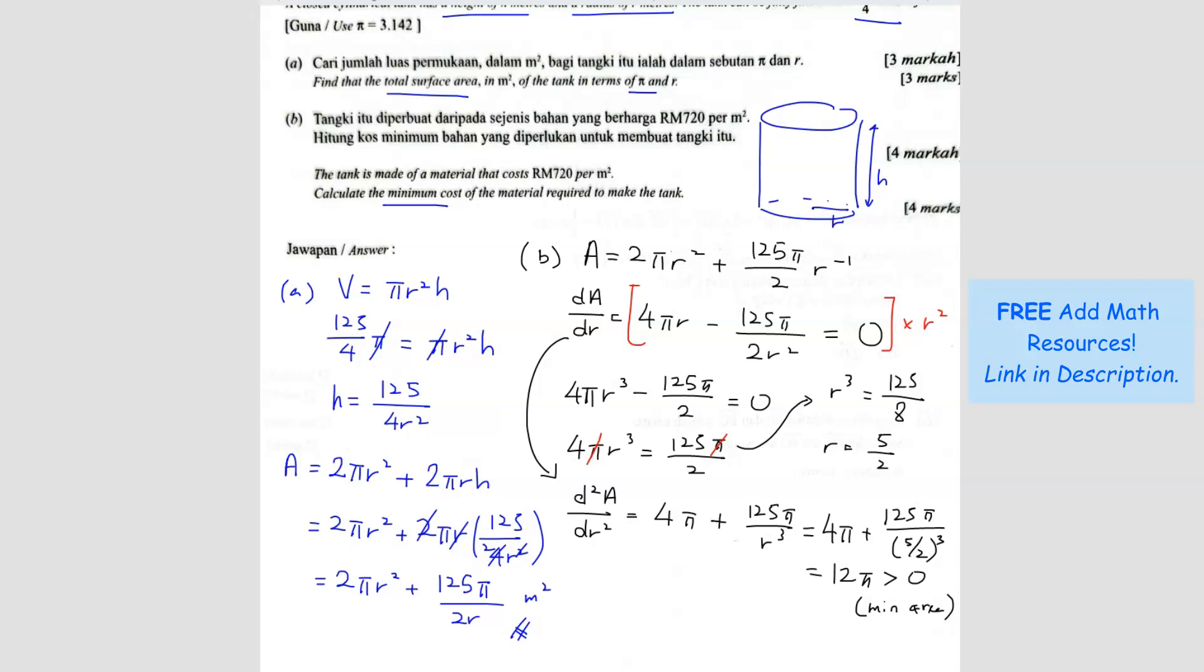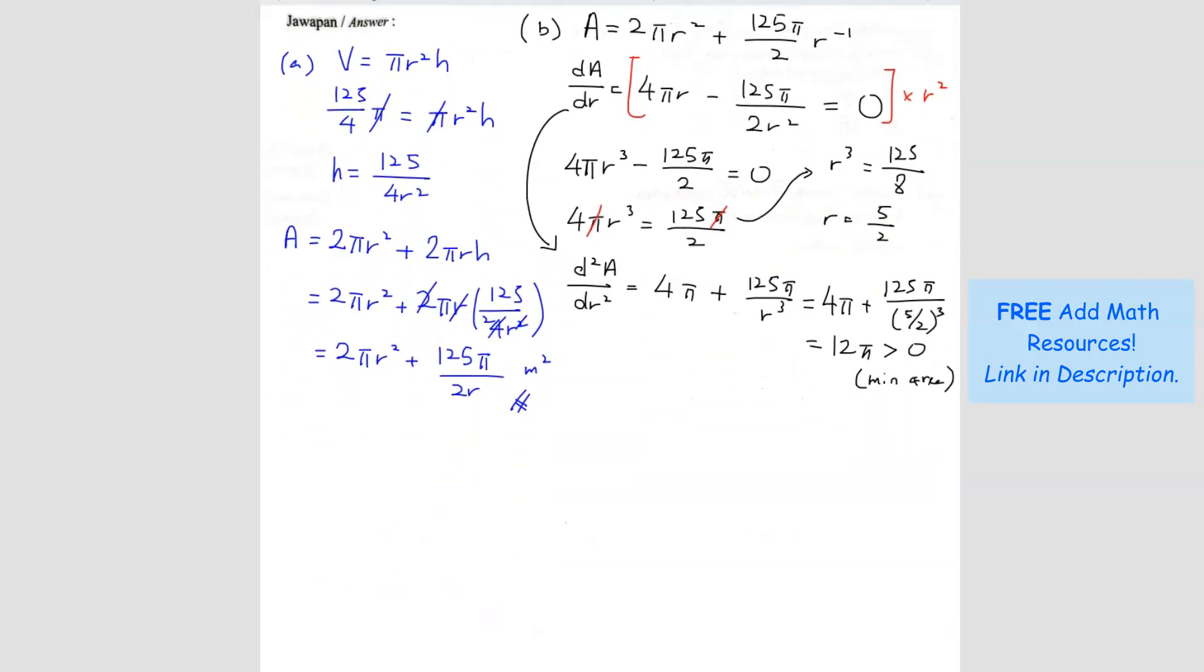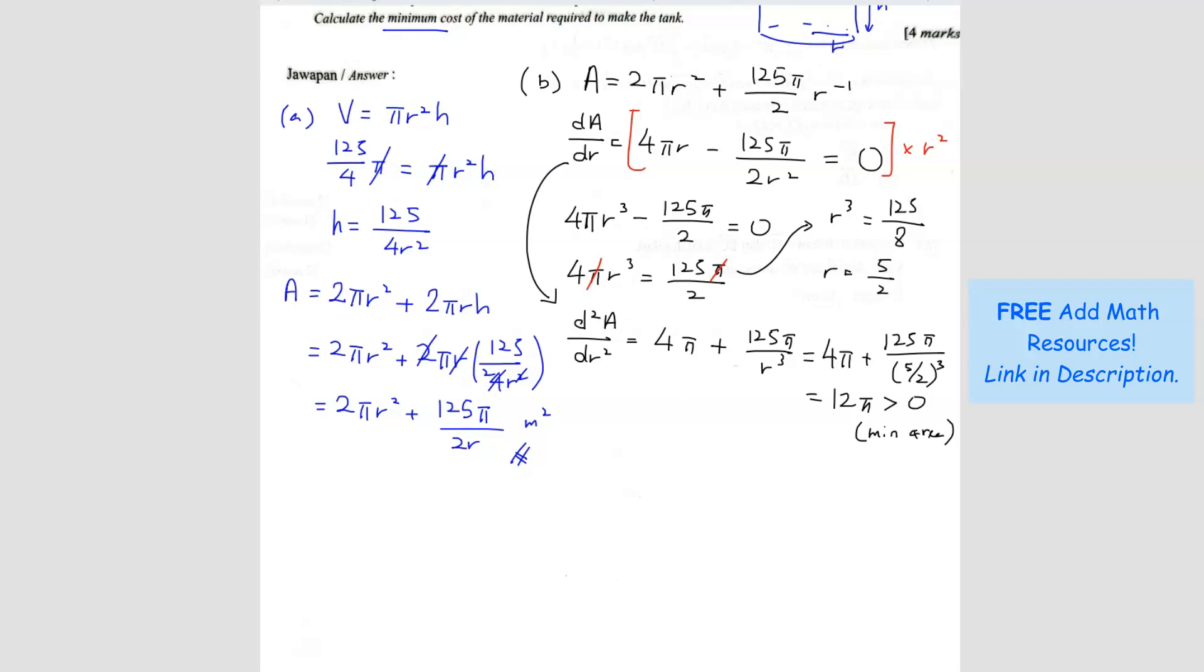Now that we've confirmed it's more than 0 and it's a minimum, we can find the area. We substitute r equals 5 over 2 into the area equation. So I get 2 pi times 5 over 2 squared plus 125 pi over 2 times 5 over 2.